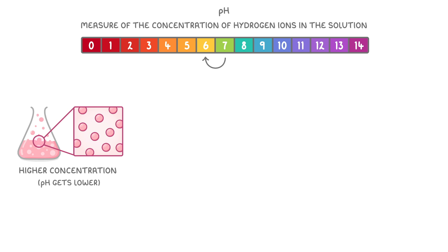In fact, each decrease of 1 on the pH scale represents the concentration of hydrogen ions increasing by a factor of 10. So if we moved from pH 5 to pH 3, the hydrogen ion concentration would increase by 10 times and then 10 times again, so it would be 100 times higher in total.